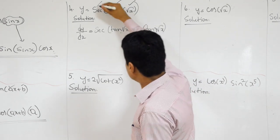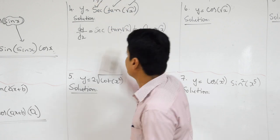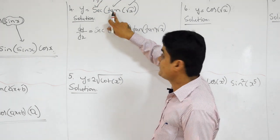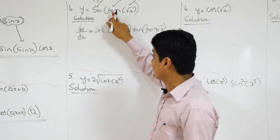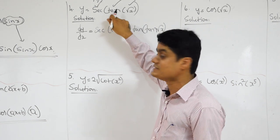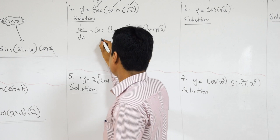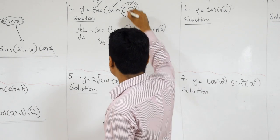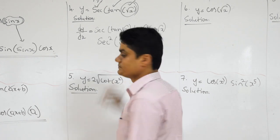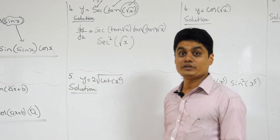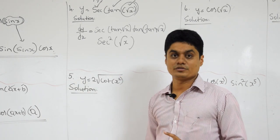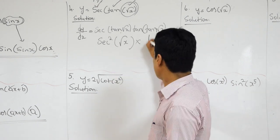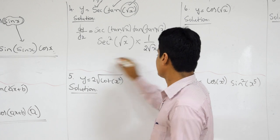Understood? First: derivative of secant X — secant X into tan X. Next: derivative of tan X — the next inside function is tan. What is the differentiation of tan? Secant squared X. Whatever is inside tan, it comes as it is: root X. And last, the innermost function — which is root X. What is the differentiation of root X? 1 by 2 root X. Done.